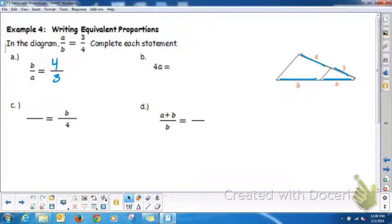For example, b. If we had used the cross product property, we would have said 4a. So then on the other side of this equation should go 3b.